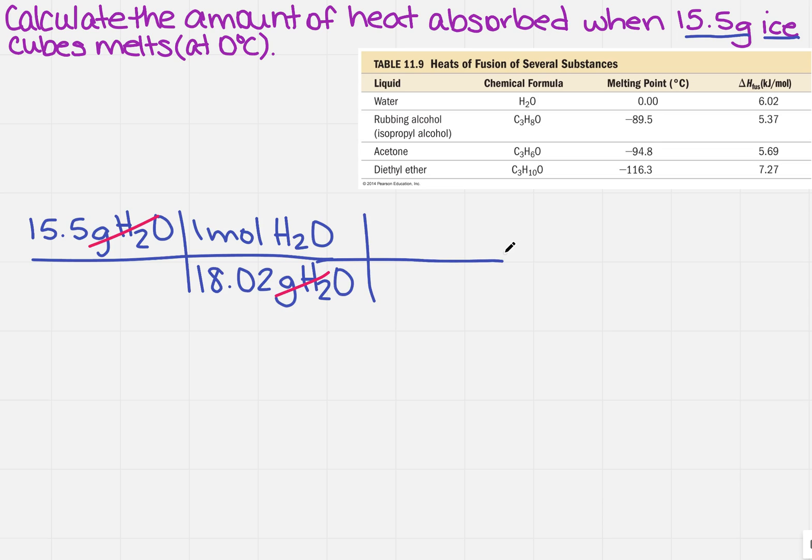So the only thing that I haven't used is the heat of fusion over here on the right-hand side. I want it for water, so I see that it's this number here, this 6.02 kilojoules per mole. Well, it just so happens that I need the mole on the bottom. So I've got 6.02 kilojoules per one mole.